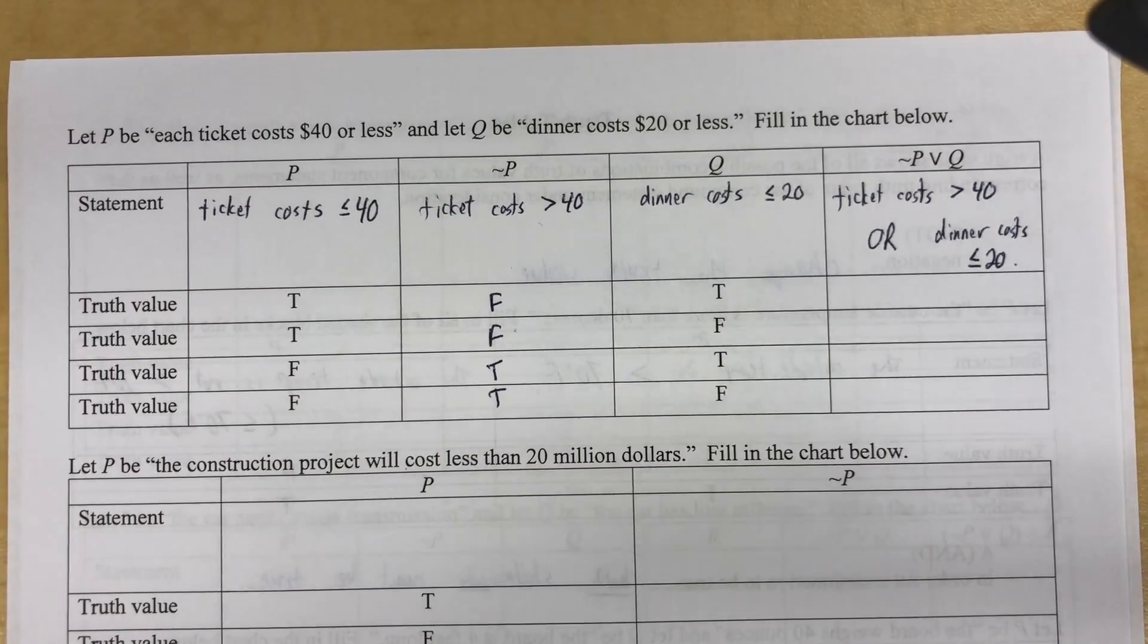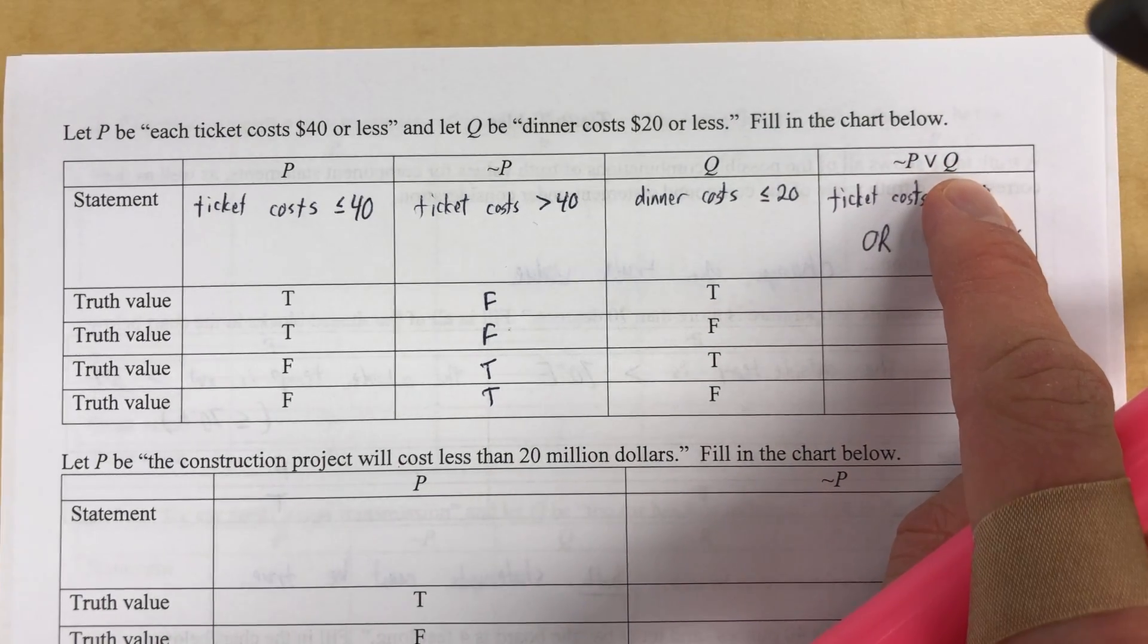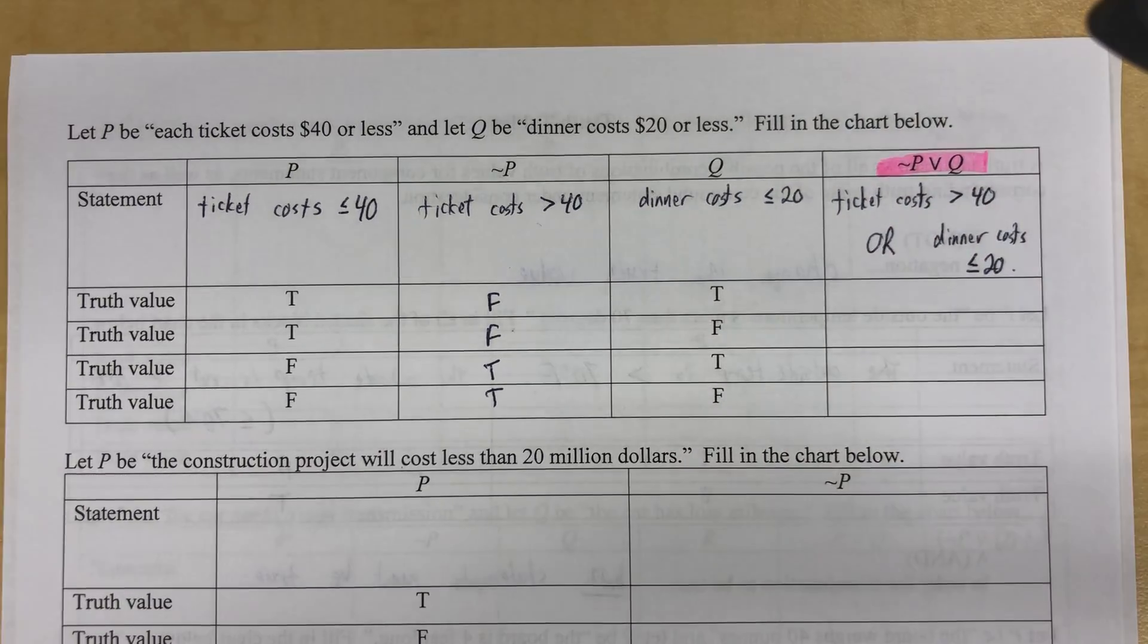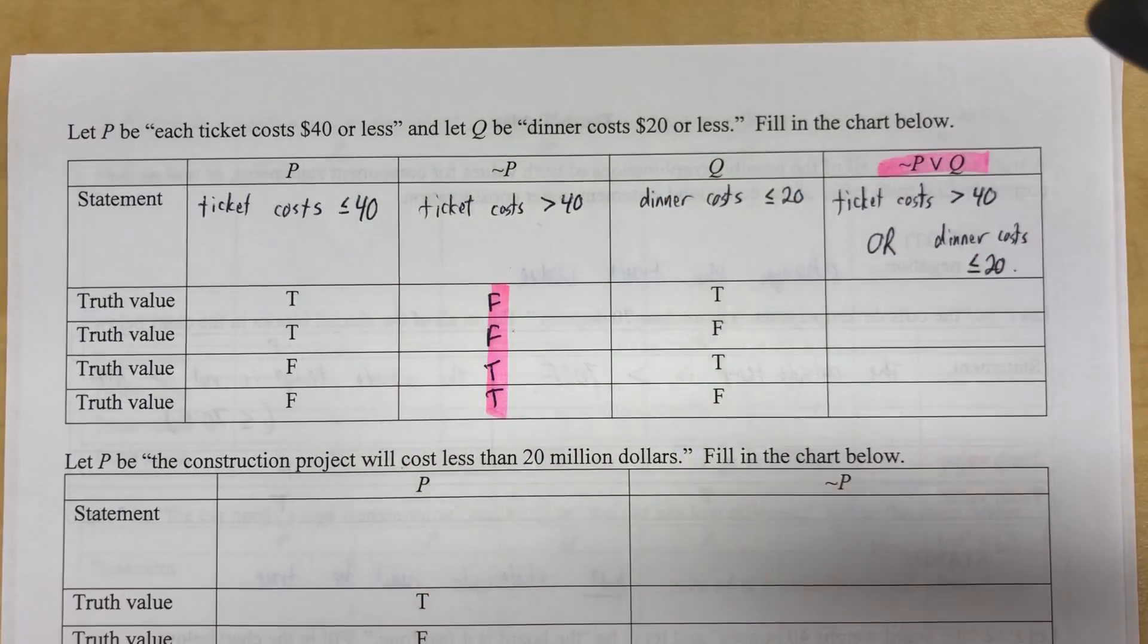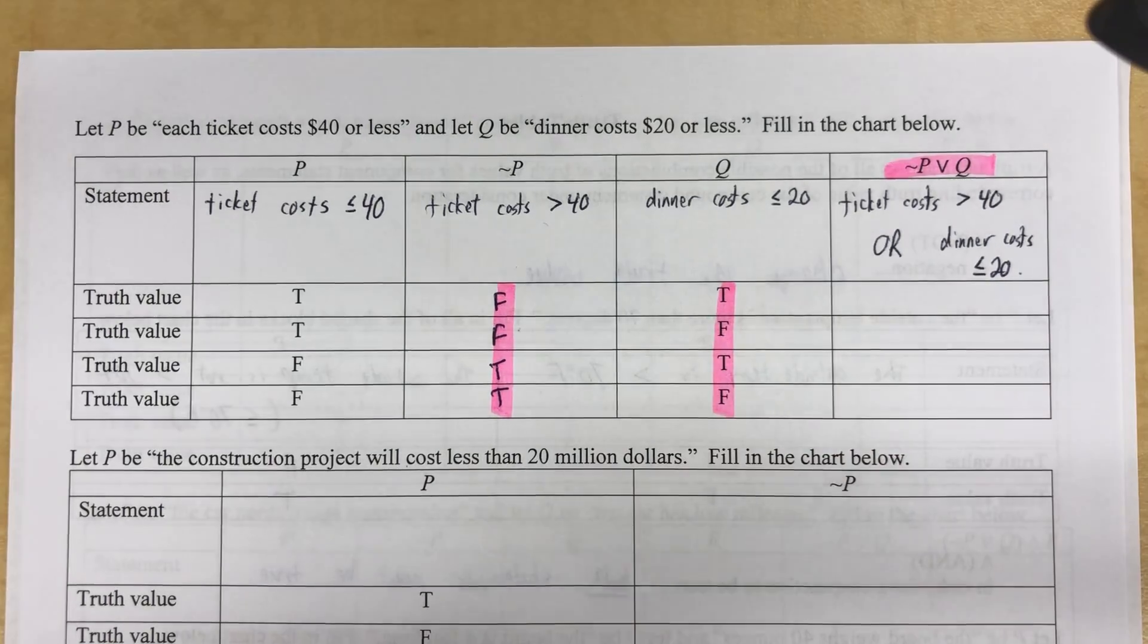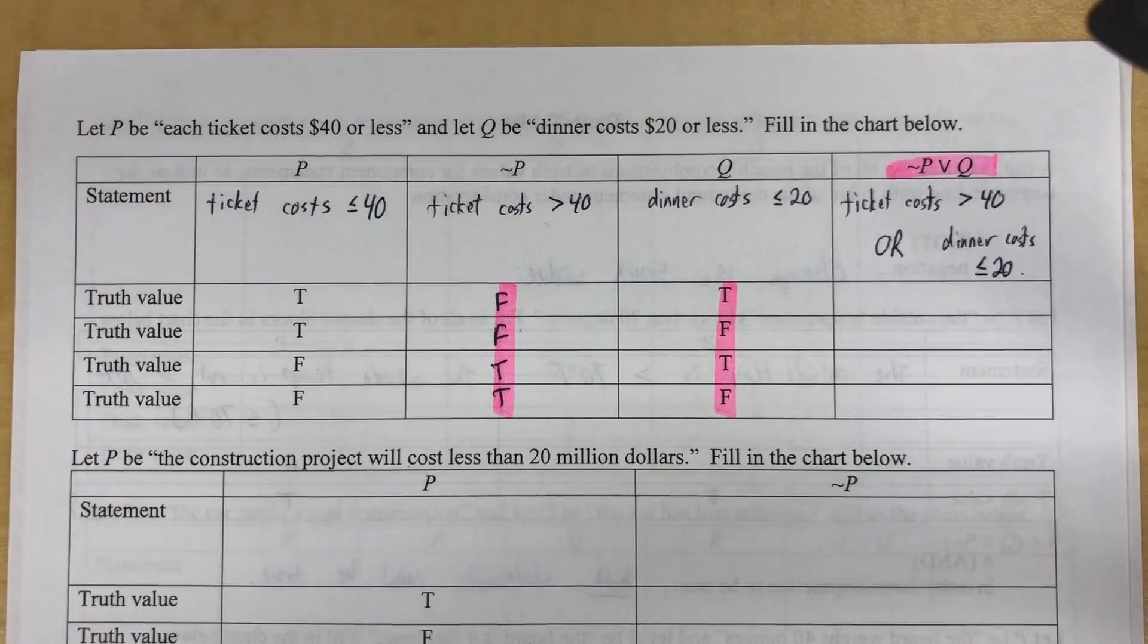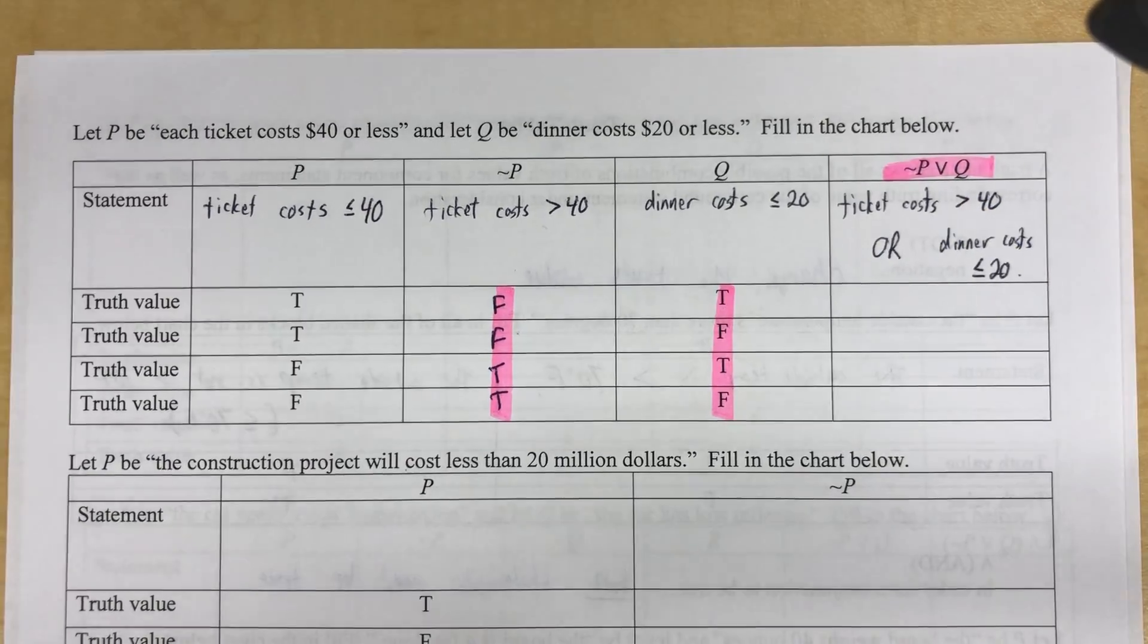Okay, so now I'm going to use a method that is really handy. This is this right here. When I'm building this column, when I'm filling out this column right here, I need two things. I need not P. Well, I'm going to find that right here and I need Q and I'm going to find that right here. So I'm going to use those two columns to fill in this column. So let's do it.